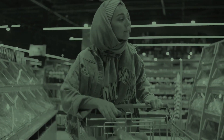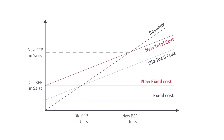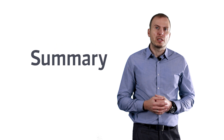And what if the fixed cost is greater? The fixed cost in the bakery will increase, for example, due to relocation to a more expensive place. A new breakeven point will be achieved later by selling more units. If the fixed cost of a bakery rises to $36,000, an additional 10,000 buns have to be sold.